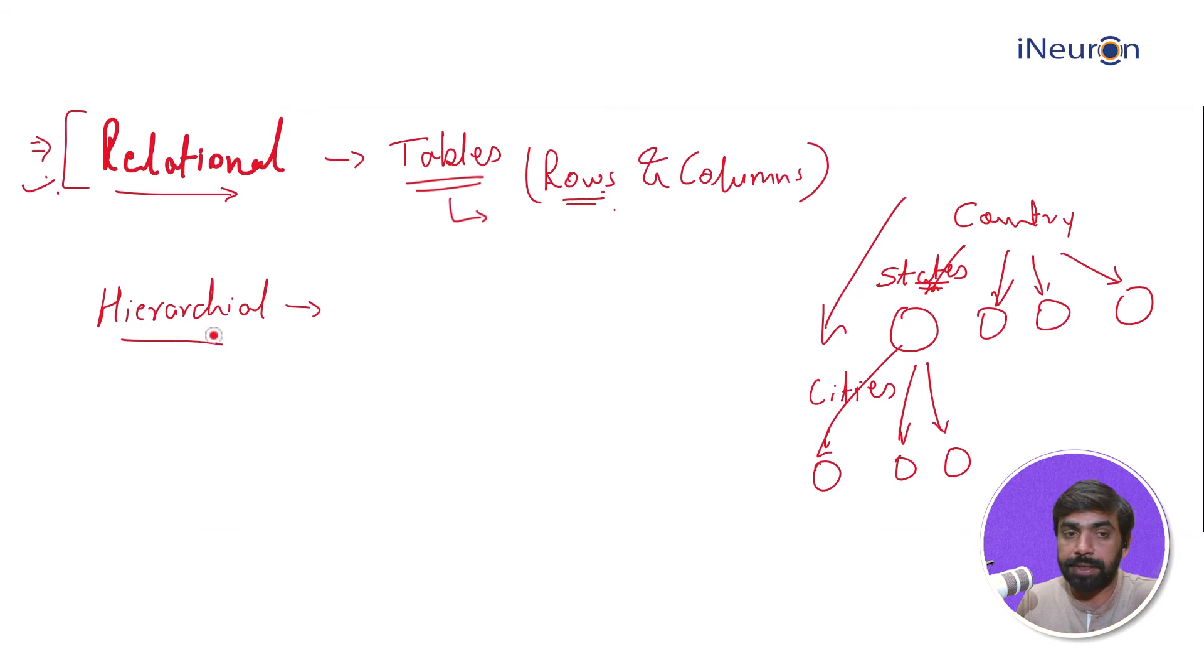There are certain others as well, something like network. Network and hierarchical are not very different. Hierarchically, of course, there is a natural hierarchy. Network looks similar to what we see in hierarchical.